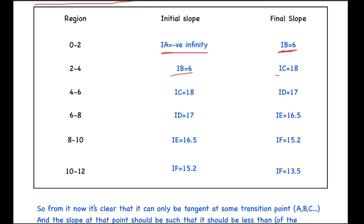And mind you that these slopes are basically the velocities, average velocities, or the velocity of the deer which are possible, or rather which are being used here. Similarly, from IC to ID it is 18 to 17, from ID to IE it is 17 to 16.5, and so on.